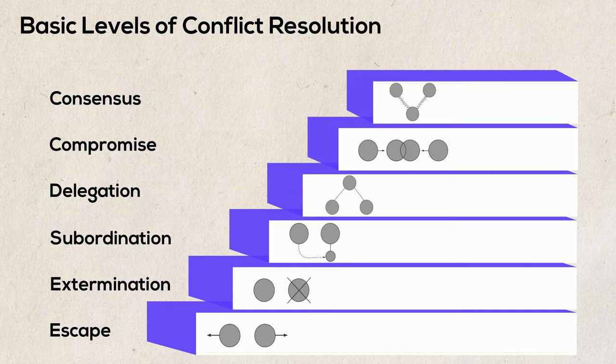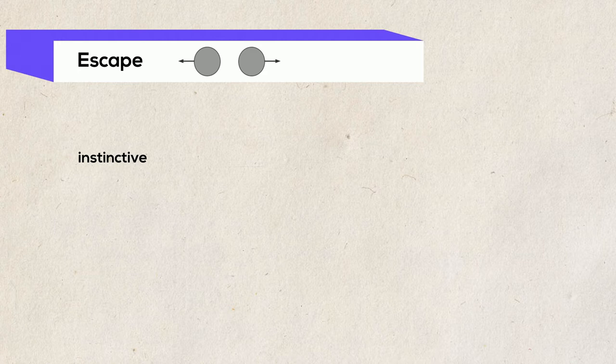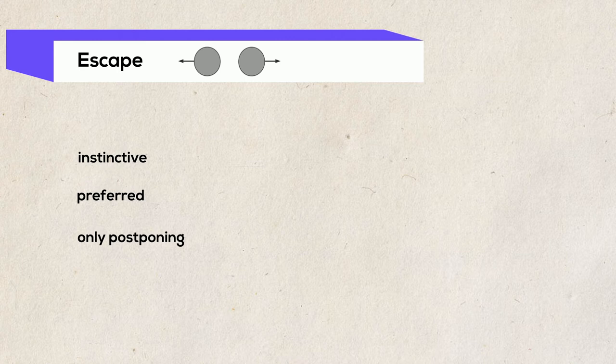According to studies, escape as a pre-programmed instinctive behavioral pattern is usually the preferred option in a confrontation. Although some conflict situations can certainly be resolved with this tactic, the escape variant usually only has a postponing effect. If actors avoid a confrontation, there are no losers and a certain, mostly healthy, distance is established between the parties. Escape has the major disadvantage that no learning process can be initiated.